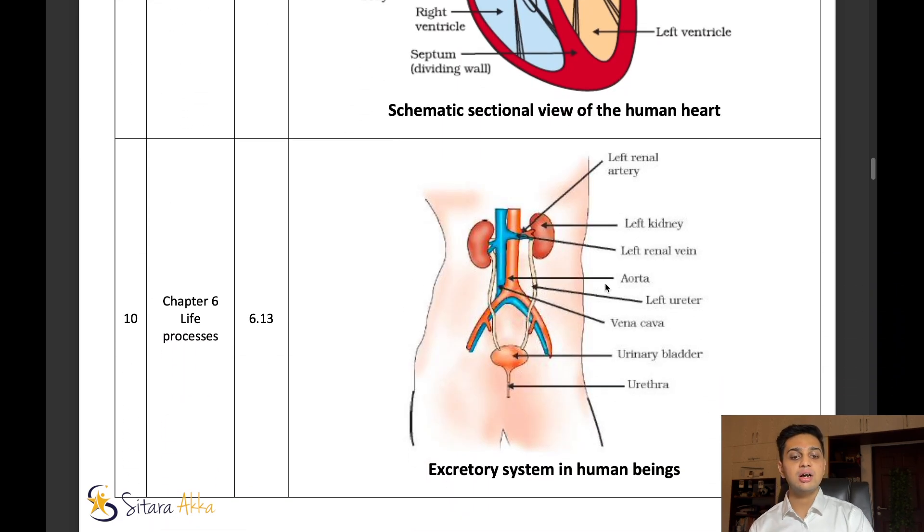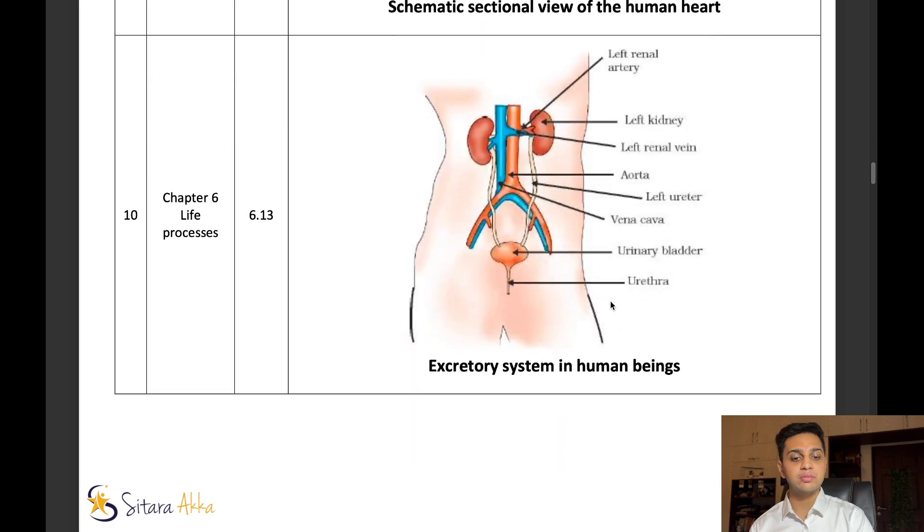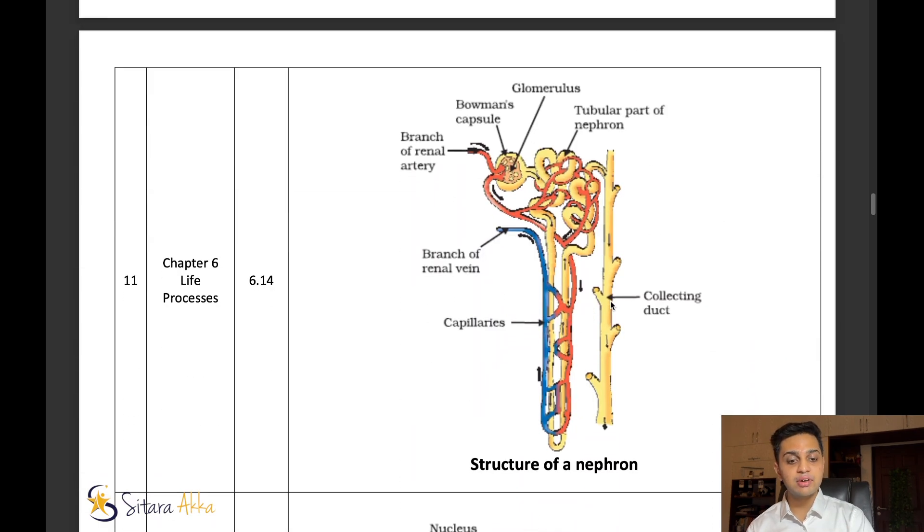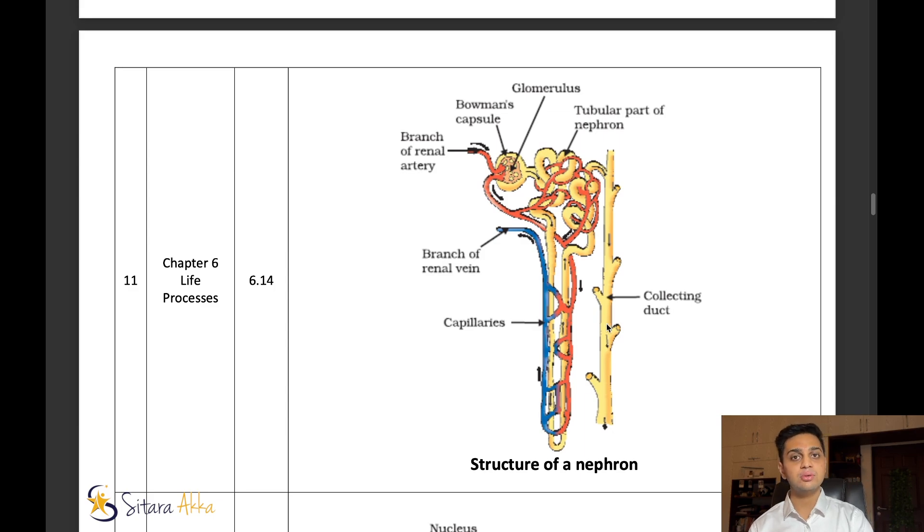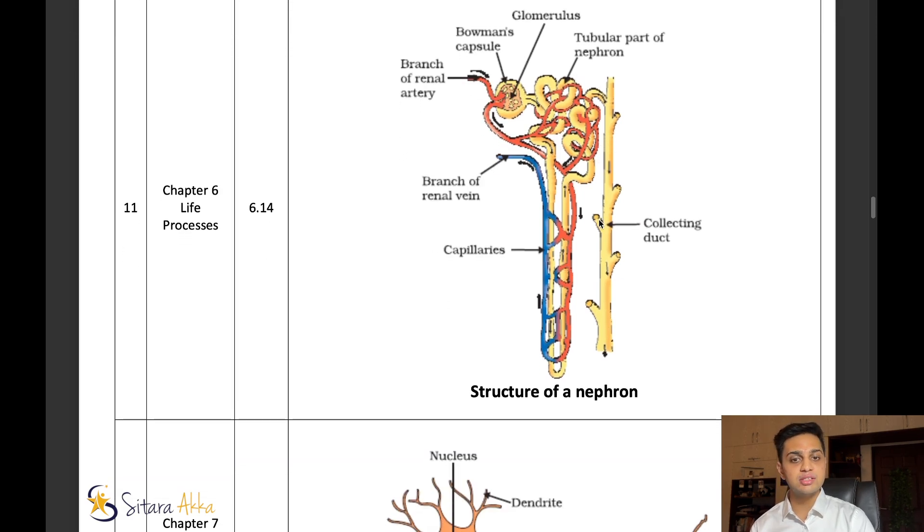Next, excretion system. They will actually give you this whole diagram itself, and they will ask you to mark the kidneys, the urethra, and the vena cava and all of that. Next, one very important diagram, structure of nephron. This is very important for the exam. Structure of a nephron - understand where the capillaries are. It is not too hard to draw, though it looks very complicated. It is very easy with practice. Mark the Bowman's capsule very carefully, and also understand the function of the Bowman's capsule. They will ask you to draw the diagram of structure of the nephron and ask you the function of Bowman's capsule.